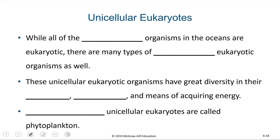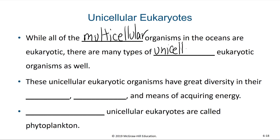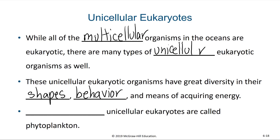While all of the multicellular organisms in the oceans are eukaryotic, there are many types of unicellular eukaryotic organisms as well. These unicellular eukaryotic organisms have great diversity in their shapes, behavior, and means of acquiring energy.